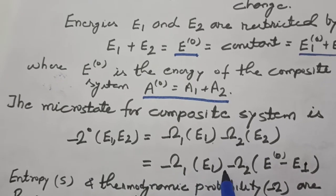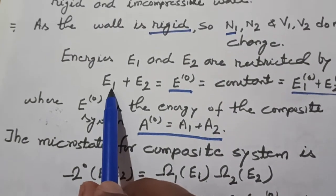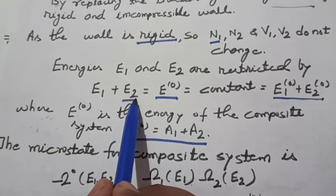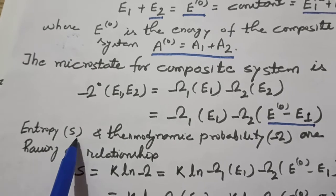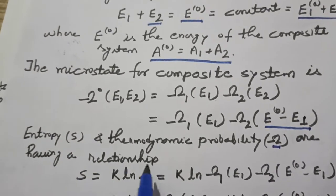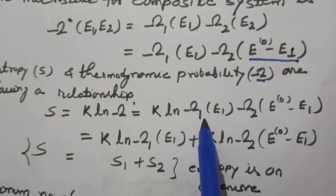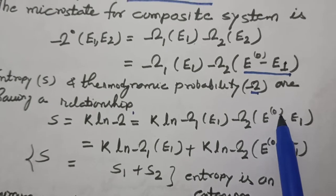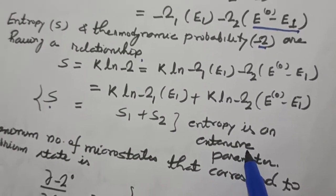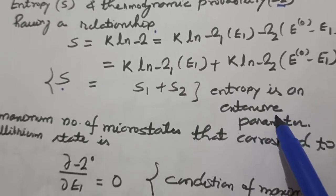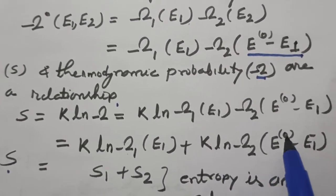Also, entropy S and thermodynamic probability omega have the relationship S equals K ln(omega). Since entropy is an extensive and therefore additive parameter, we can write S equals K ln(omega1, E1) plus K ln(omega2, E0 minus E1), which gives S equals S1 plus S2. For the maximum number of microstates corresponding to the equilibrium state, the partial derivative of omega0 with respect to E1 equals zero.